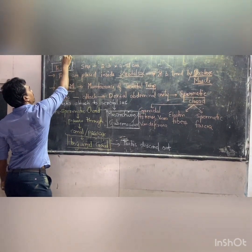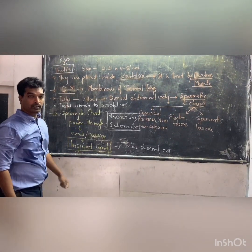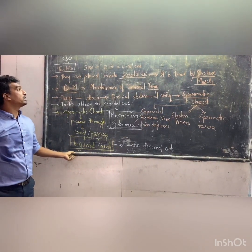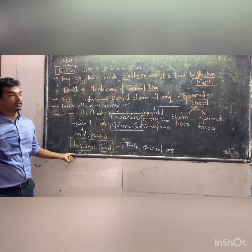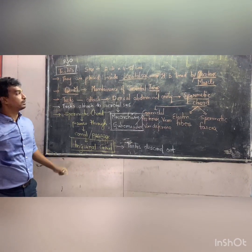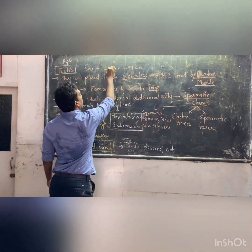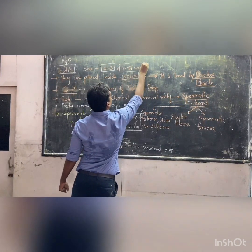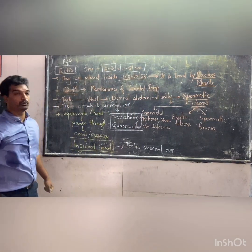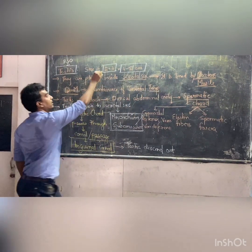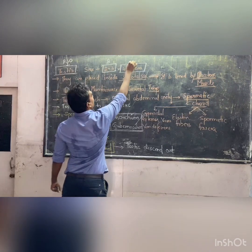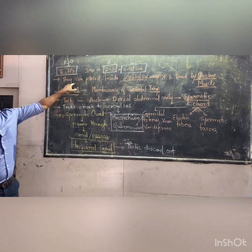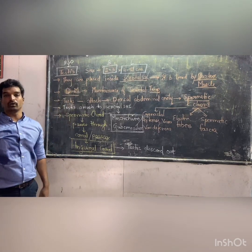In the male reproductive system, the primary sex organ is the testes — a pair of oval-shaped structures which develop from the mesoderm. These structures have a breadth of 2 to 3 centimeters and a length of 4 to 5 centimeters. The testes are placed inside the scrotal sac.